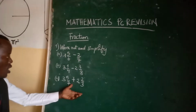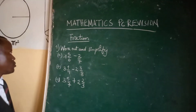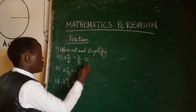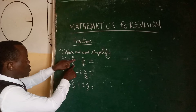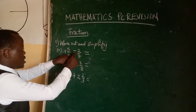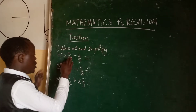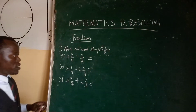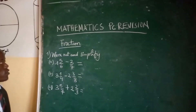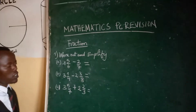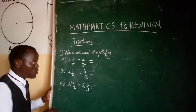Let's start by question 1A: 1 and 5 over 6 minus 2 over 7, equals how many? Remember we studied different types of fractions where we have seen proper fractions, improper fractions, and mixed fractions. This first number is a mixed fraction, and this second number is also a mixed fraction.